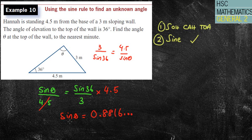Remember, you haven't found theta, you have found sine theta. So, make sure you press shift sine. I'm going to use the answer key, and now I get 61.845 dot dot dot.